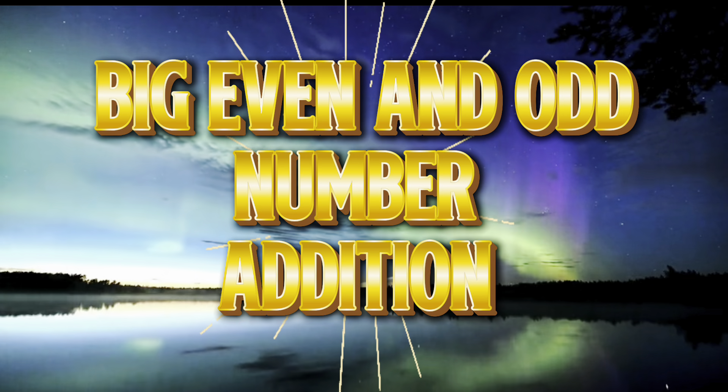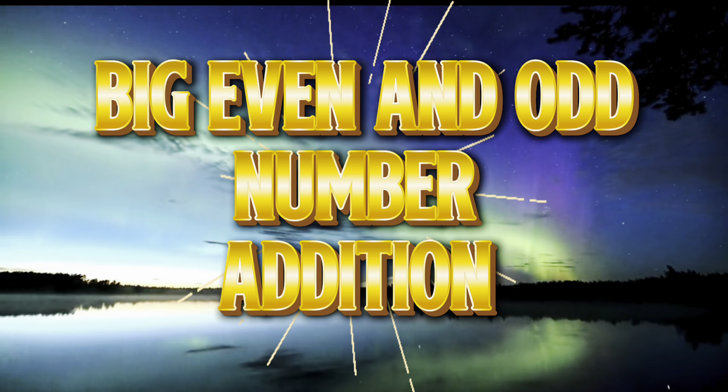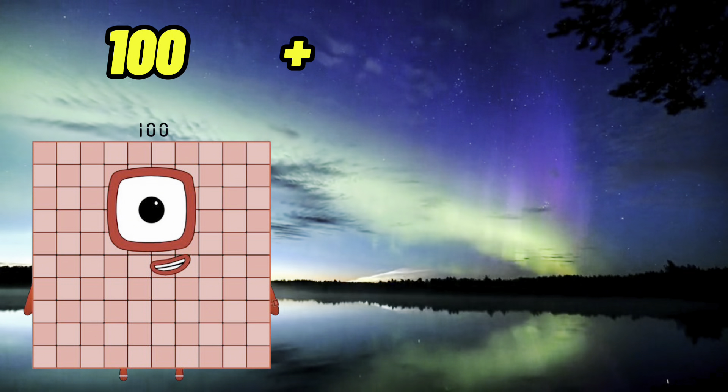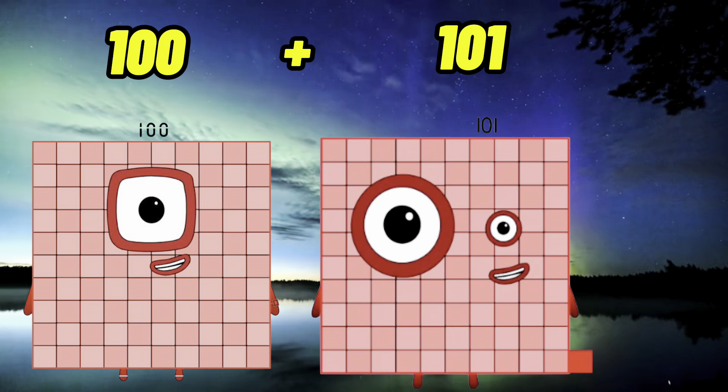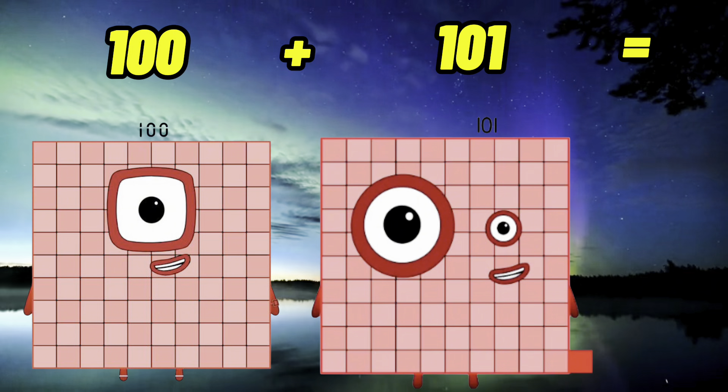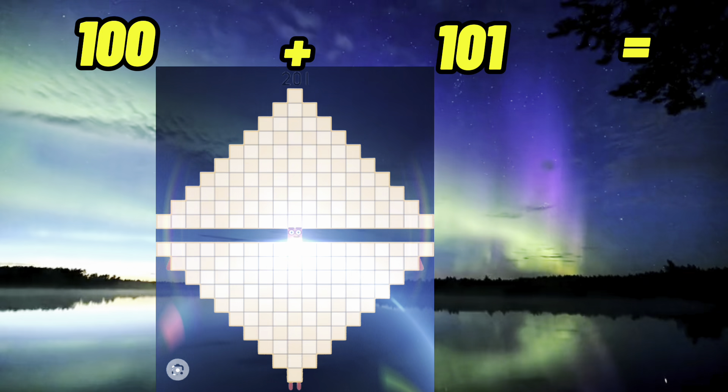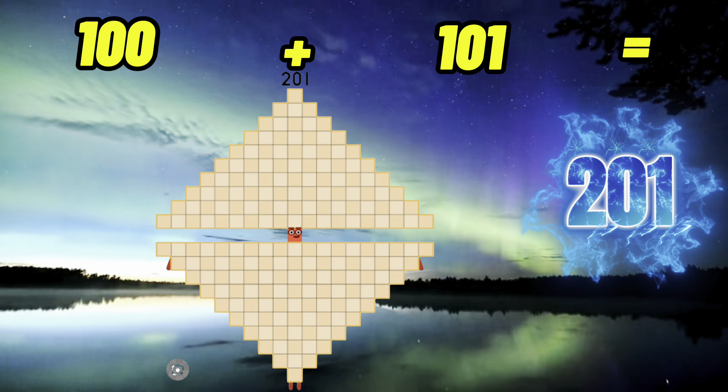Big Even and Odd Number Addition. Let's start! 100 plus 101 equals 201.